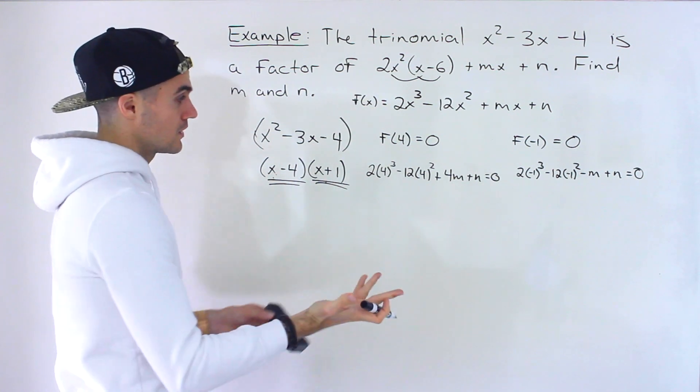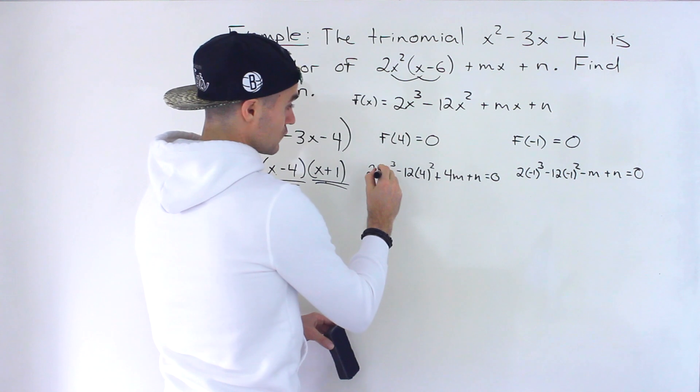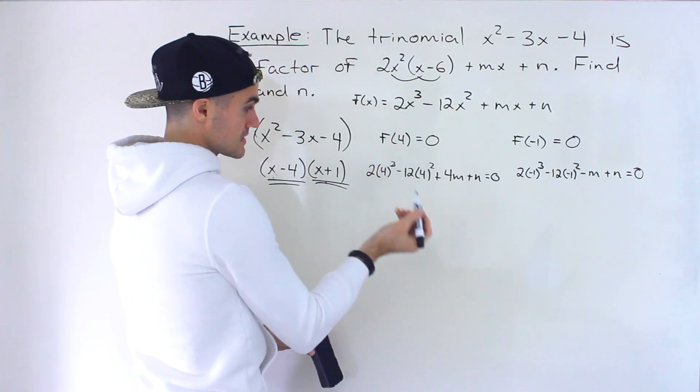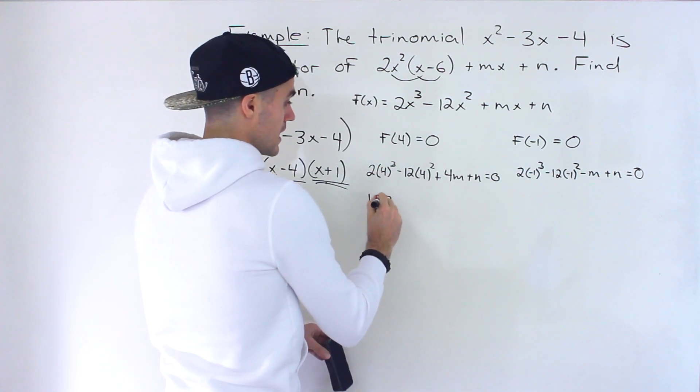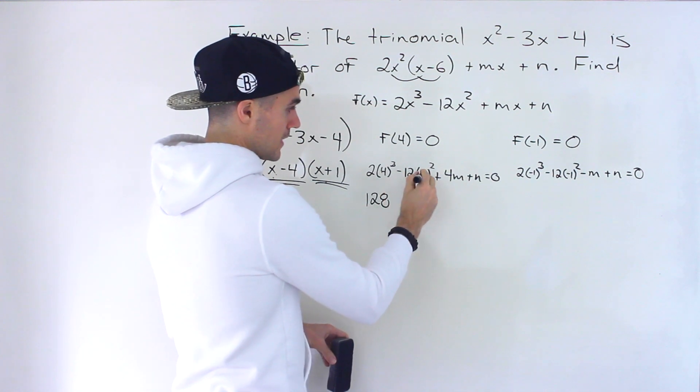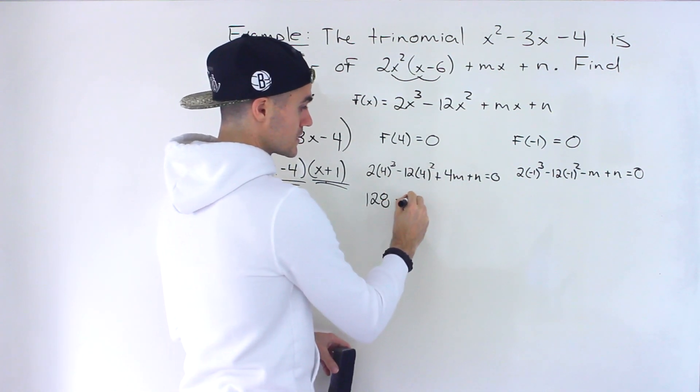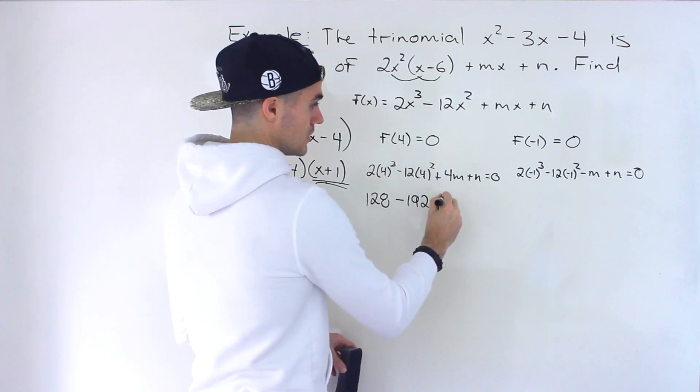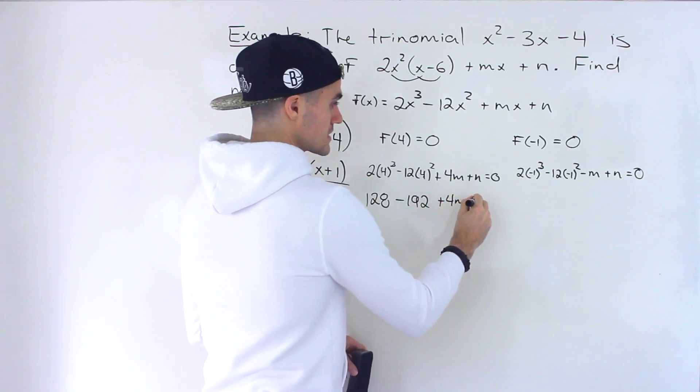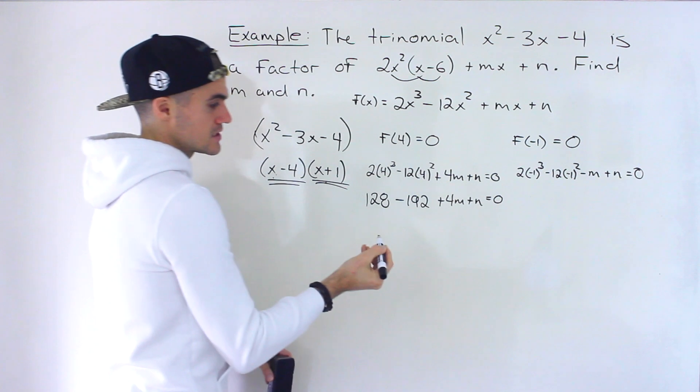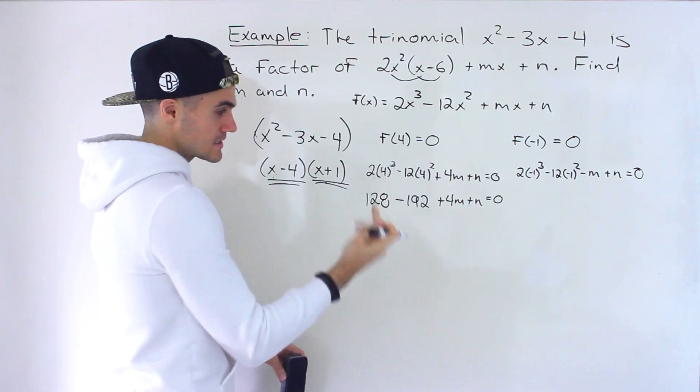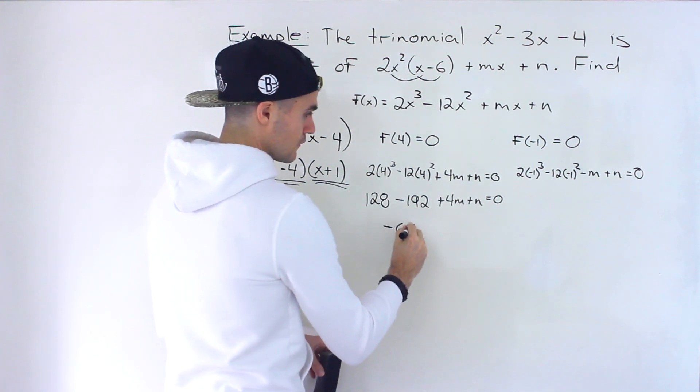And now we have two equations, two unknowns. We just have to simplify. So 4 to the power of 3 gives us 64 times 2 gives us 128. And then we have 4 to the power of 2 which is 16 multiplied by 12 would give us 192 plus 4m plus n equals 0. 128 minus 192 gives us negative 64.